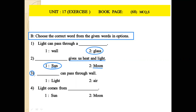Number 3: Blank can pass through a wall — options: light, air. Answer: air can pass through a wall. Number 4: Light comes from blank — options: sun or moon. Light comes from the sun, not from the moon.